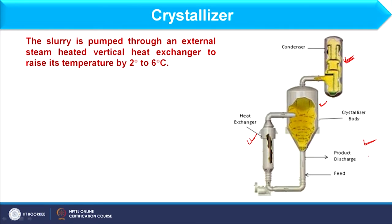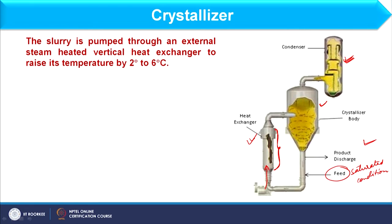As far as the working of a crystallizer is concerned, whatever solution is there is considered as feed, and this is basically at a saturated condition. Feed is usually available at saturation condition. When the feed enters, it first goes through a pump to the heat exchanger, where the temperature of the feed is increased — usually by 2 to 6 degrees Celsius. The slurry is pumped through an external steam-heated vertical heat exchanger to raise its temperature by 2°C to 6°C.